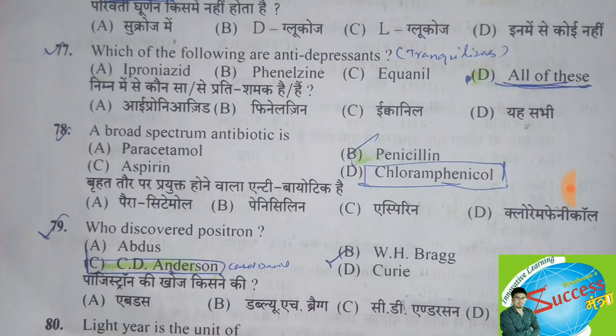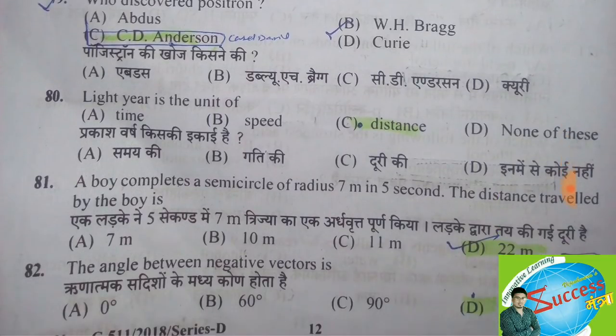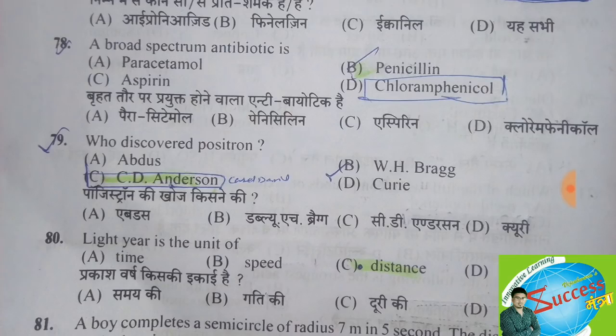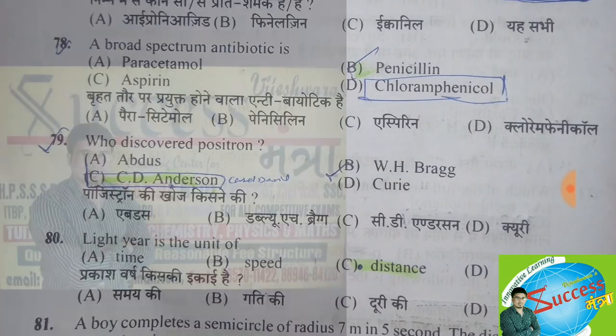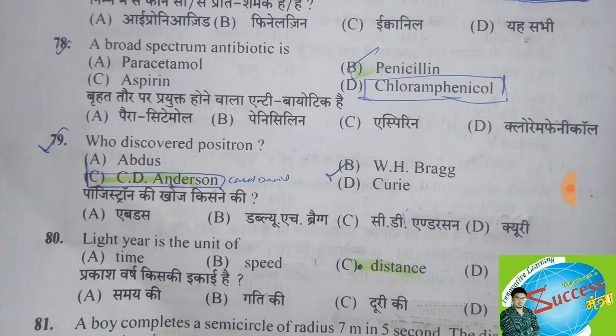Chloramphenicol is a broad spectrum antibiotic. Broad spectrum antibiotics are those which are used against gram-negative as well as gram-positive bacteria. Who discovered the positron? The correct answer is option C, Carl David Anderson. These were the questions asked in this exam; for the remaining sections, keep watching my YouTube channel.